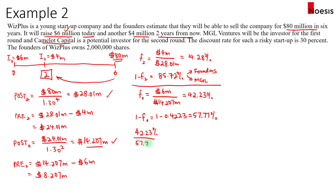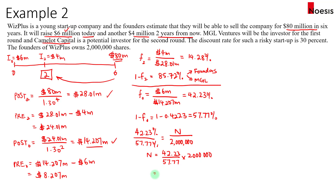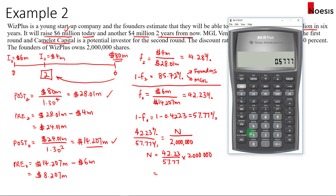Taking forty-two point two three percent divided by fifty-seven point seven seven percent gives us the ratio of MGL's shares to the founders' two million shares. So N for MGL equals forty-two point two three divided by fifty-seven point seven seven, times two million. That means MGL would receive approximately one point four six two million shares.